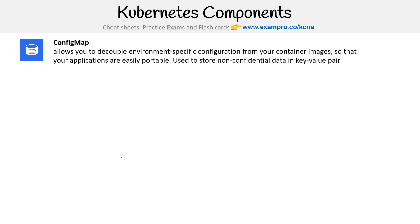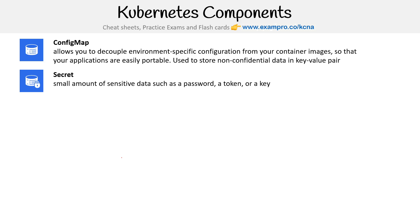Then you have a secret. A secret is a small amount of sensitive data such as a password, a token, or a key. It's basically a config map with the option to encrypt it.